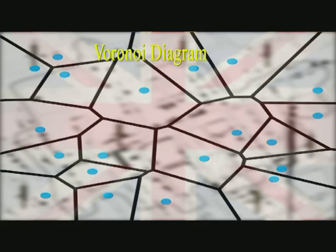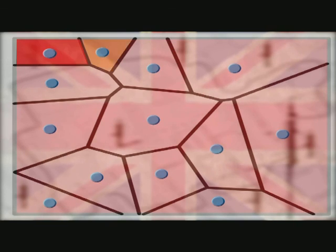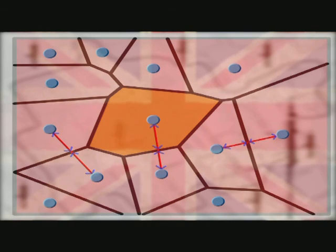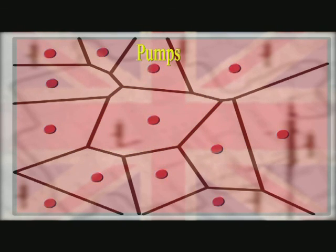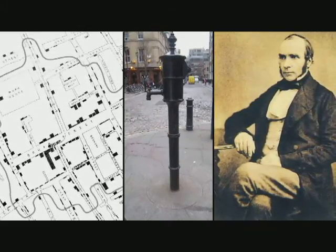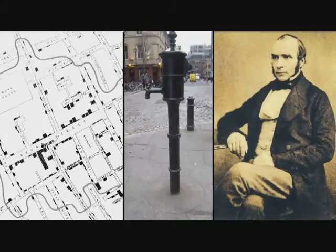This mapping that Snow did is actually an example of a brilliant mathematical device called a Voronoi diagram. Starting with a set of points, you construct a series of cells surrounding each point — each cell contains all points closer to its defining point than to any other point in the set, and the borders of the cells are equidistant between the defining points of adjacent cells. In Snow's diagram, the points are the pumps and the cells indicate the distance to the nearest pump. Snow used this mathematical analysis to convince the authorities that the disease was transmitted through water.